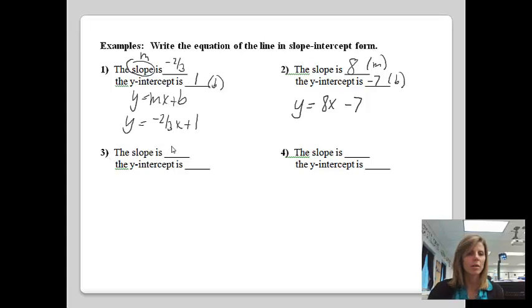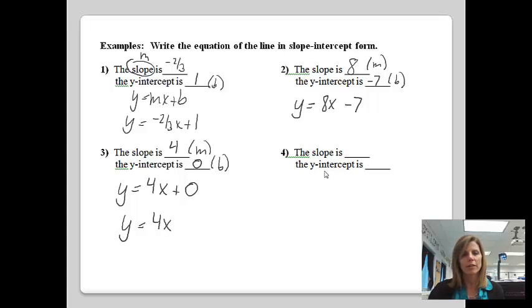The next one, let's say we have a slope of 4 and the y-intercept is 0. My slope is my m, and my y-intercept is my b. If I write the equation of the line, I'll have y equals mx, so 4x plus b. Plus b would be plus 0. A cleaner way of writing this would be y equals 4x.